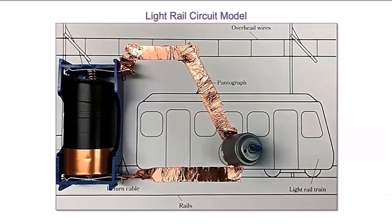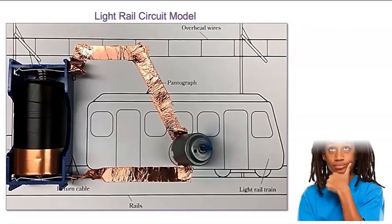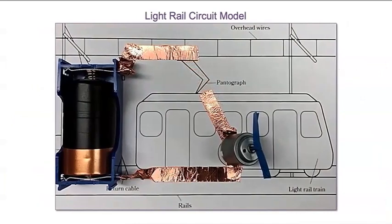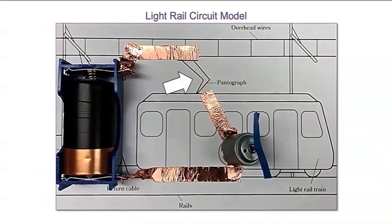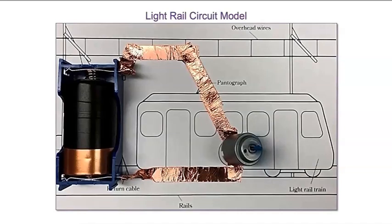Watch! The energy from the battery made the motor turn really fast. That makes me wonder: what can prevent the light rail circuit model from working correctly? If I leave a gap between the copper foil tape and the motor, the motor does not work. To close the circuit and turn on the motor, I have to connect all the components.